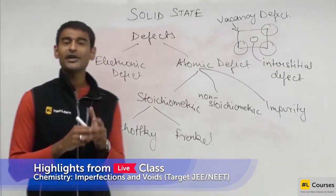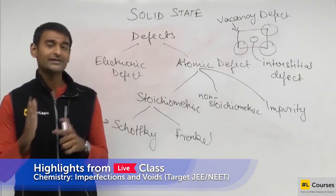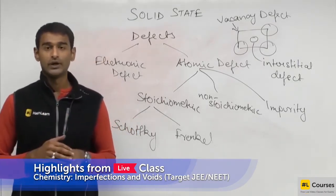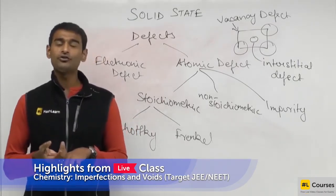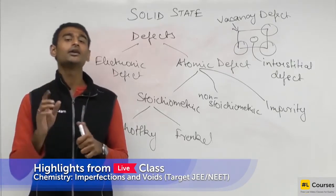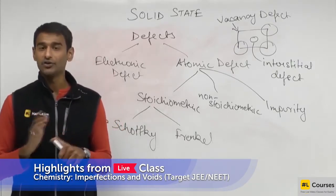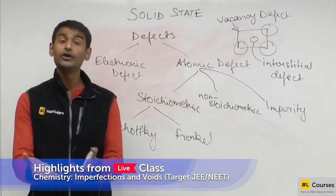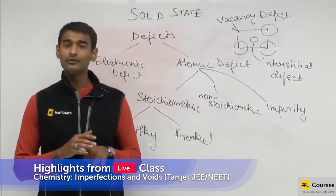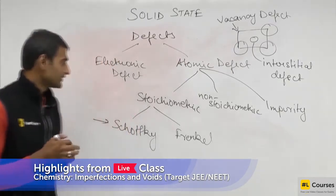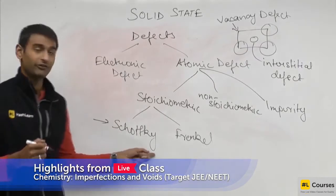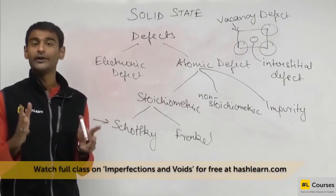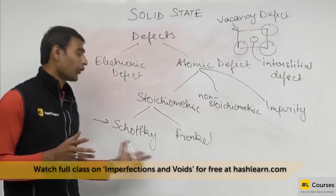Suppose there is a solid and you are expecting a density of something like 1 kg per meter cube, but when you actually measure it, you find the density is something like 0.9 kg per meter cube. The value is lesser than what we expected — it is shorter — so it is a Schottky defect. The type of defect which decreases the density of a solid is called a Schottky defect.